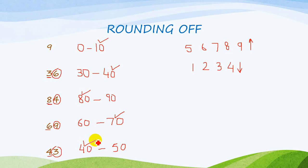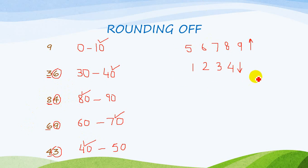This is how you're going to attempt your assignment: you will be given some numbers, write the multiples that the number is present between, and then round it up or round it down using this rule. I hope you understand this lecture. Take care and Allah Hafiz.